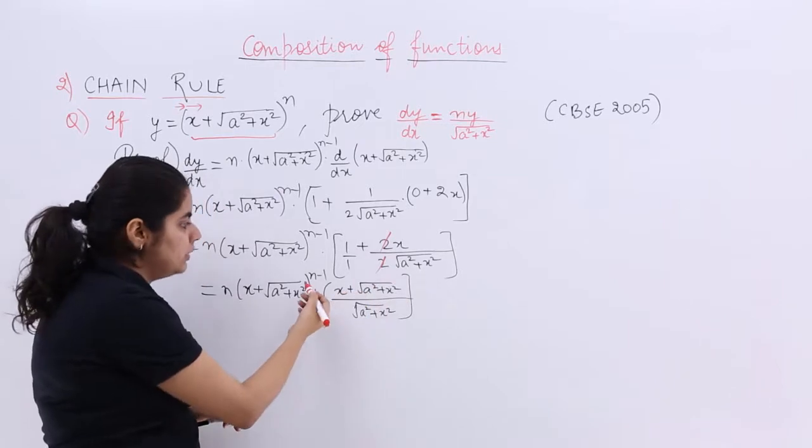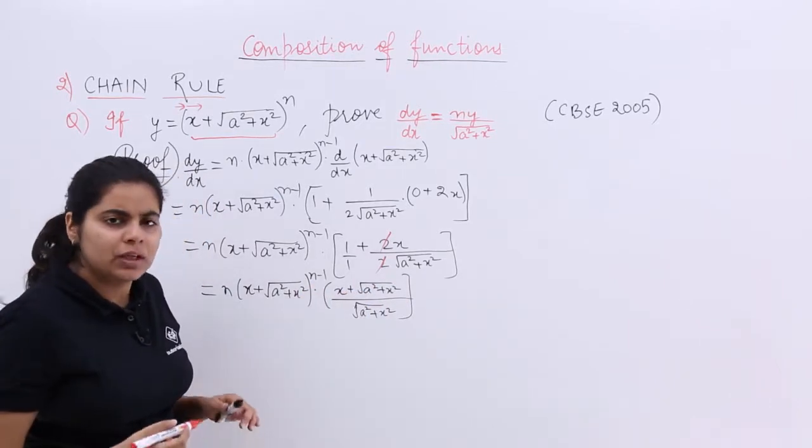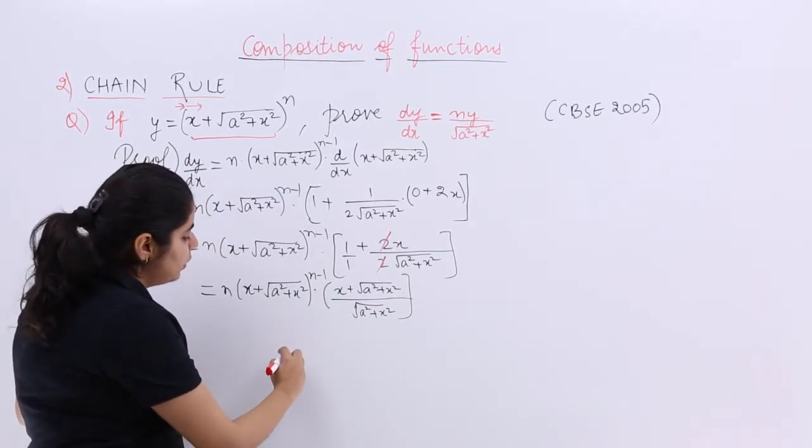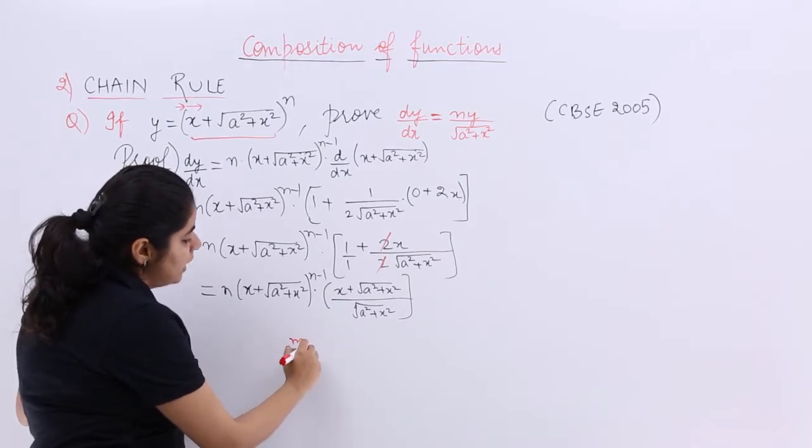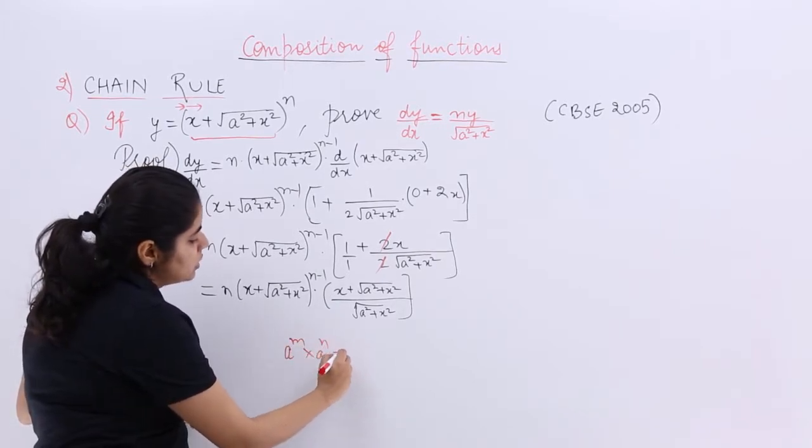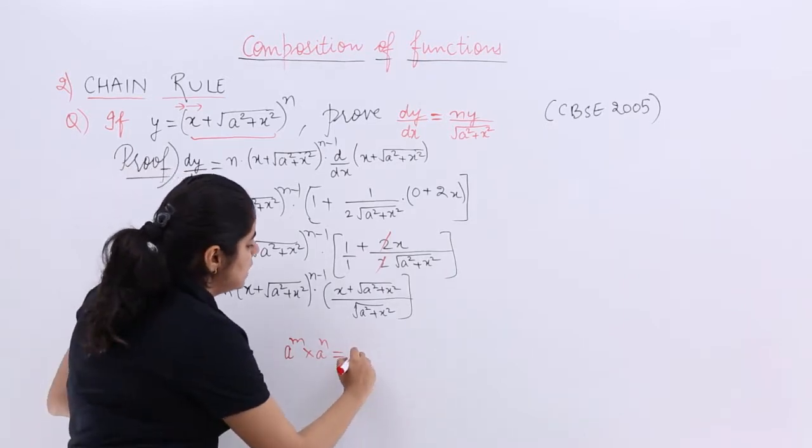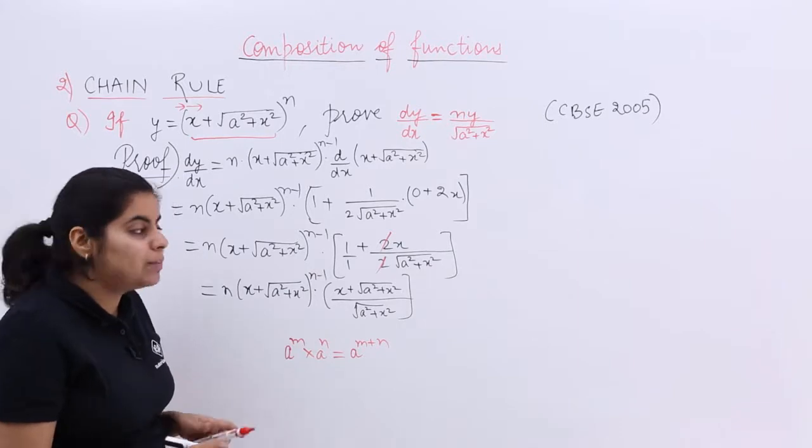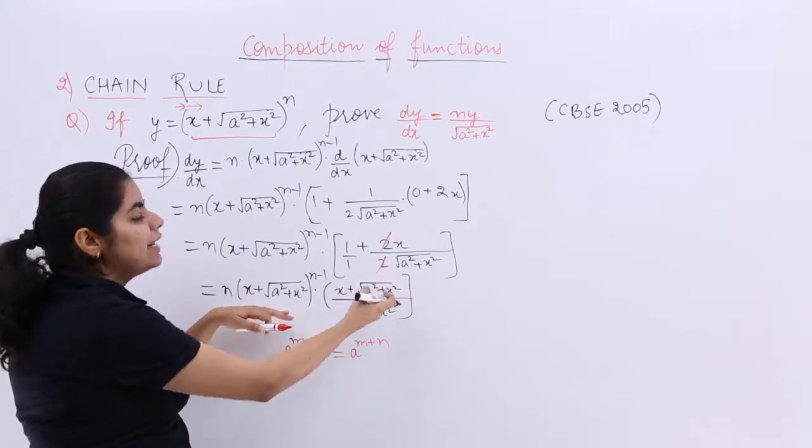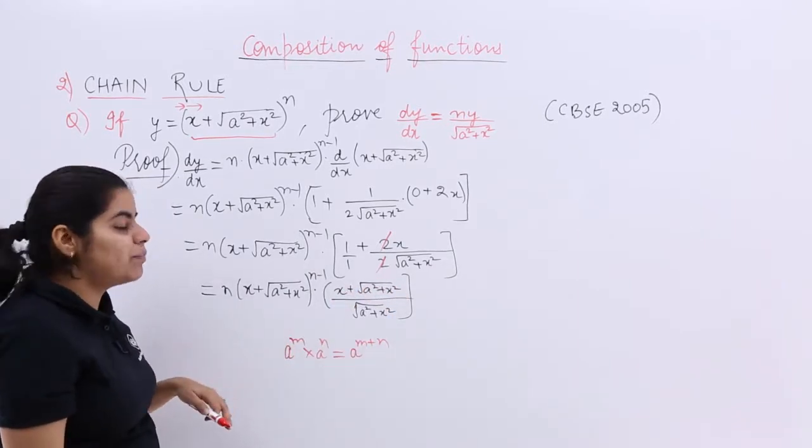This has power 1, this has power n-1. Now you know this kind of rule? The rule is what? The rule is if you have a raised to the power m multiplied by a raised to the power n, it says a raised to the power m plus n. So that is what we will be doing. We will be basically seeing and adding up the powers. So next step becomes what? Next step is very simple.